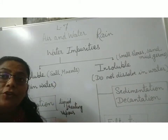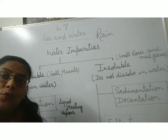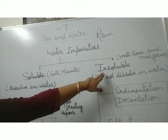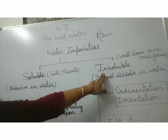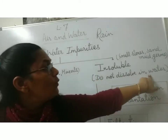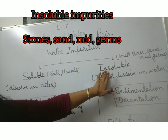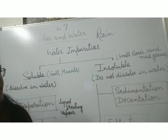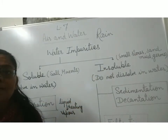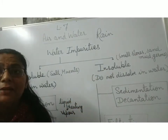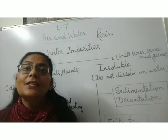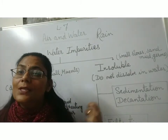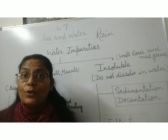You have seen, children, when you dissolve salt in water, it easily dissolves. Insoluble impurities are those which do not dissolve in water. In the insoluble impurities category, what is included? Some small stones, sand, pebbles, and some disease-causing germs also come into this category.